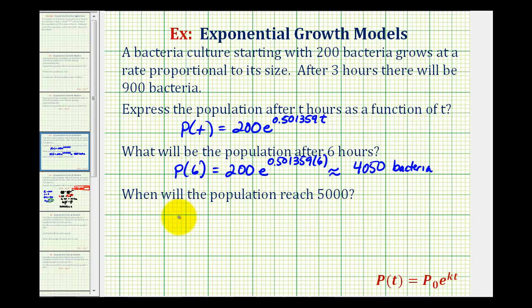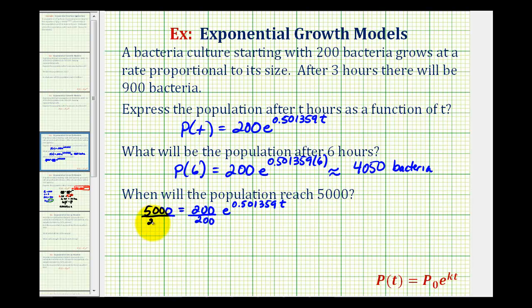For our last question we want to know when the population will reach 5,000. We can tell from the previous question it will be more than six hours. Here we're given p of t and we need to solve for t, so we solve the equation 5,000 equals 200 times e raised to the power of 0.501359t. We isolate the exponential part by dividing both sides by 200: 5,000 divided by 200 equals 25.